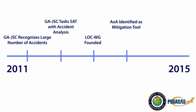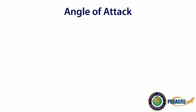Following these findings, the FAA streamlined the approval process for various angle of attack devices, deeming them minor modifications to the aircraft, which require less approval than major modifications. To better understand these devices and how they can be used, let's look at what angle of attack is.